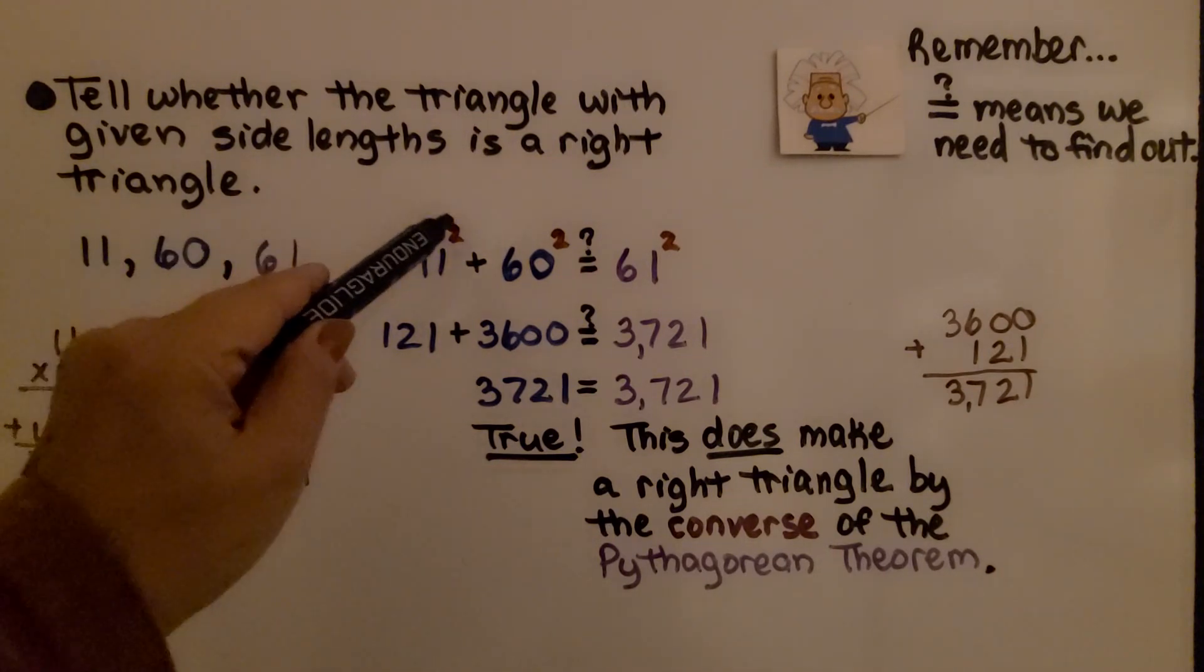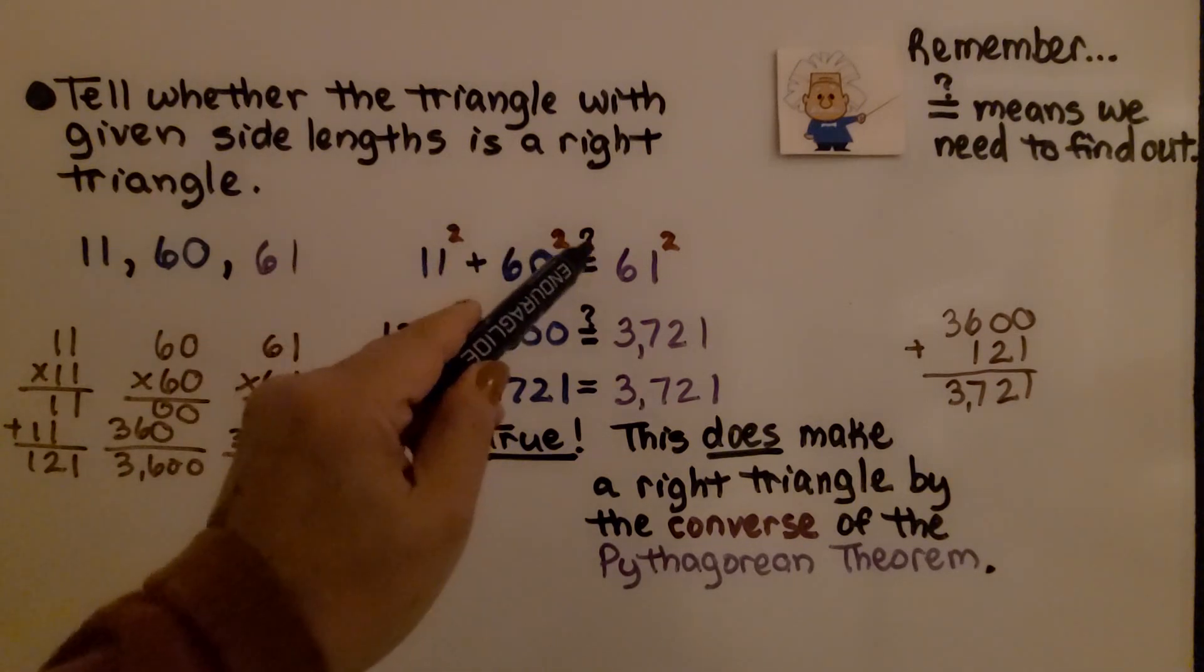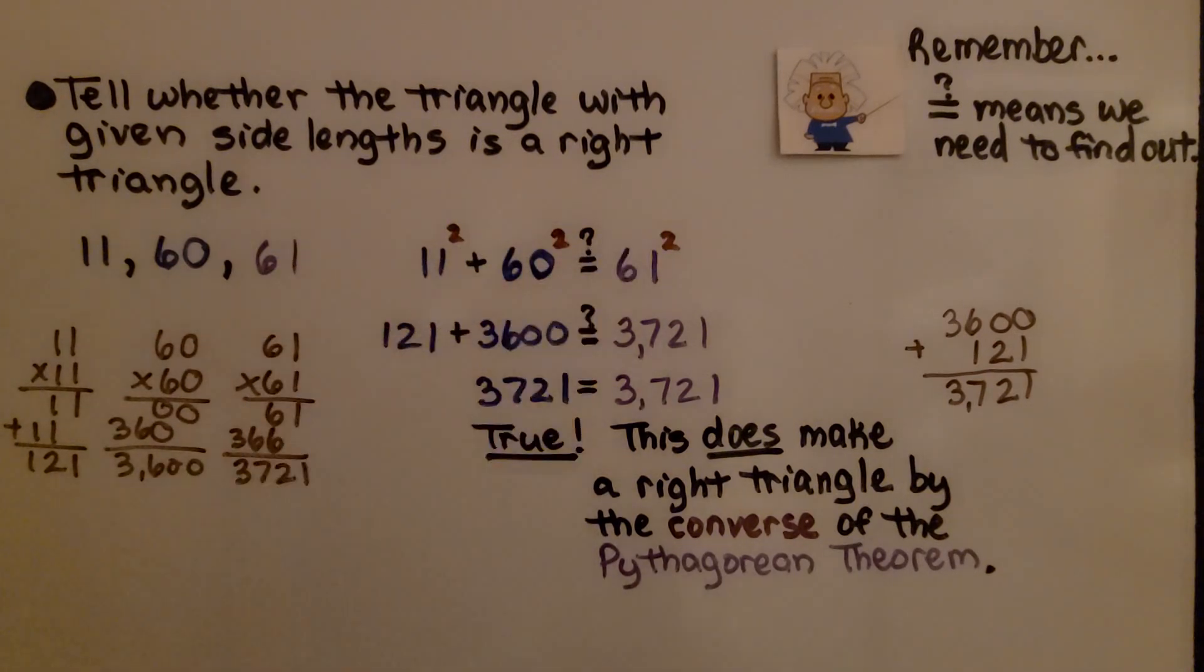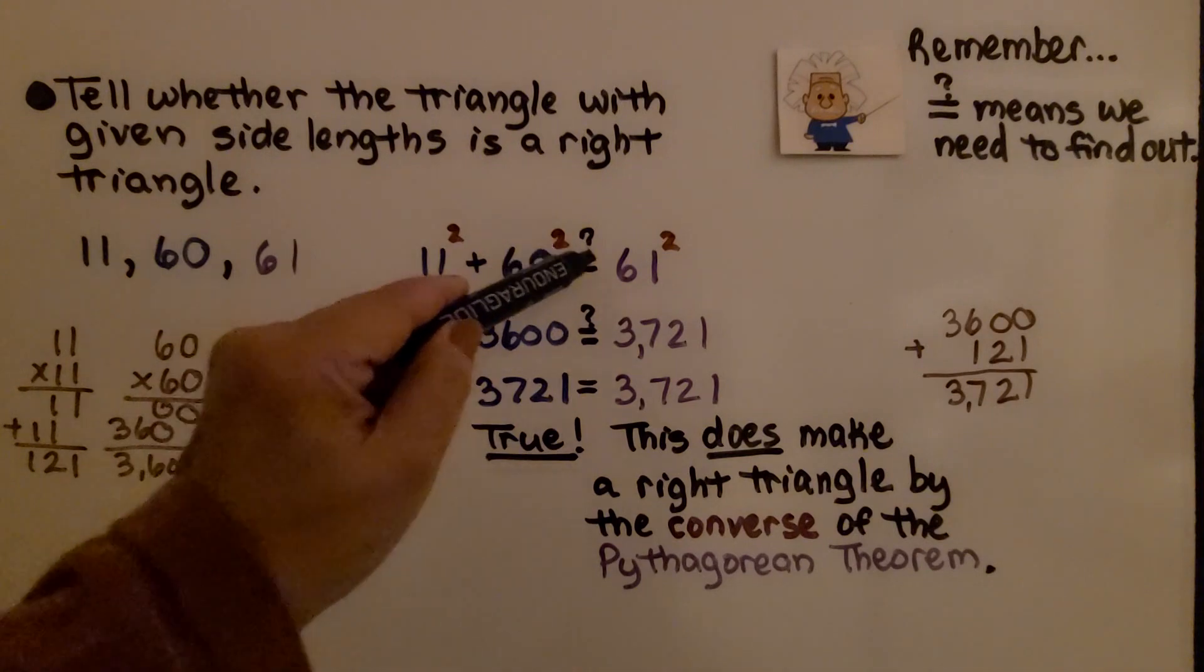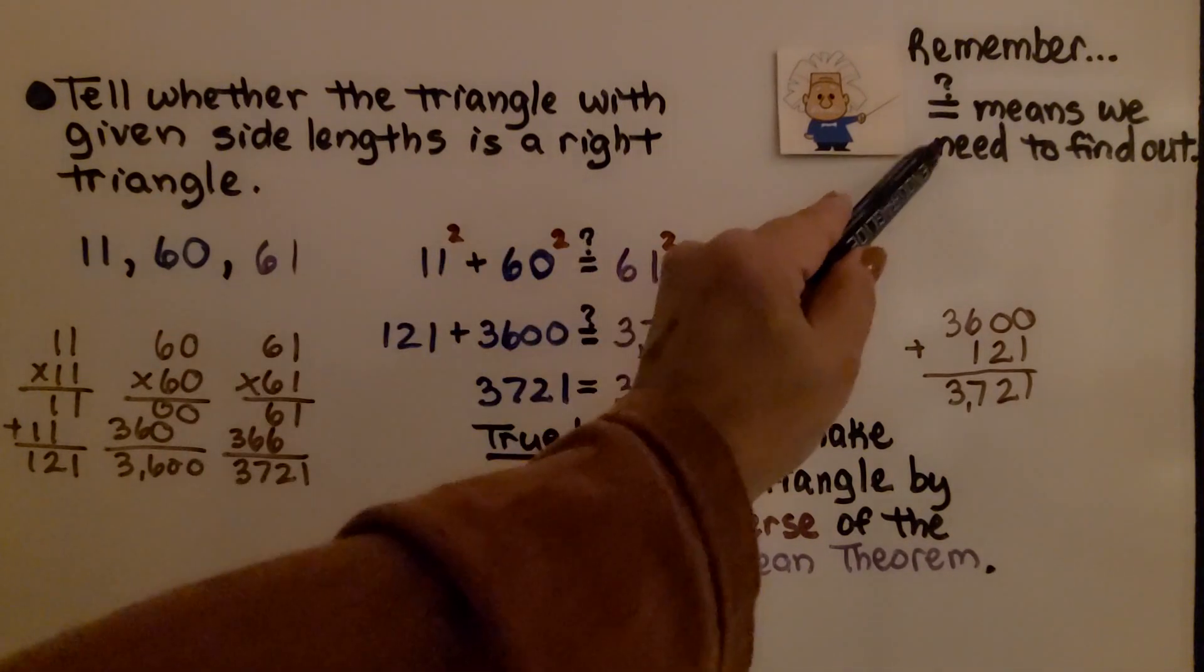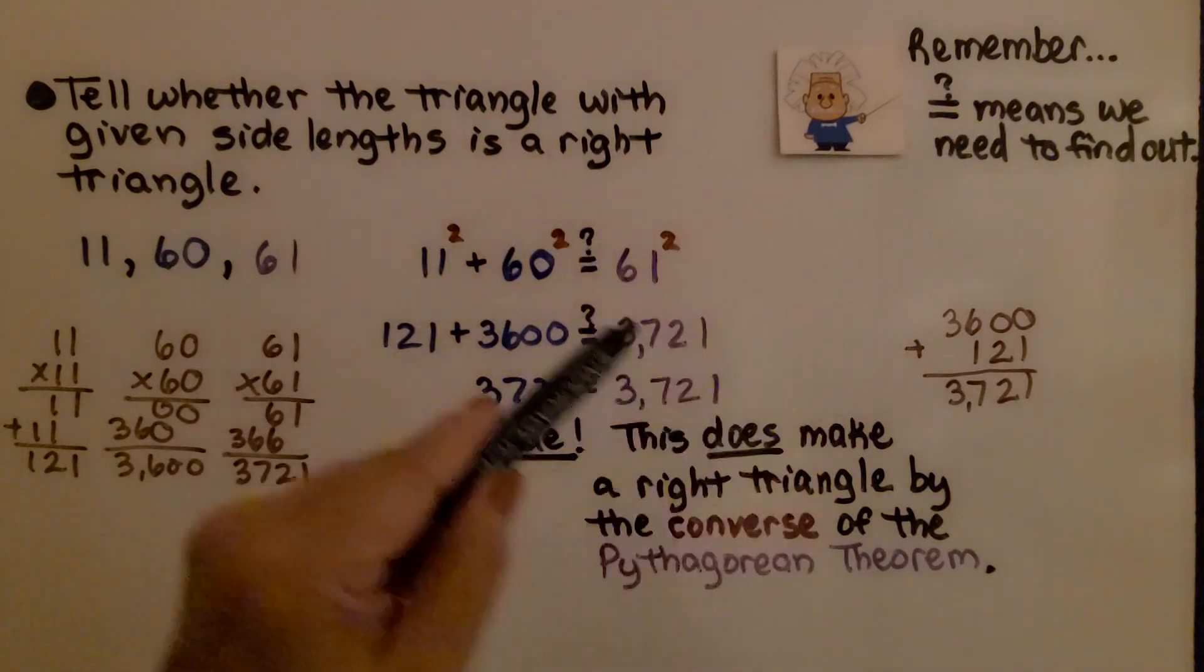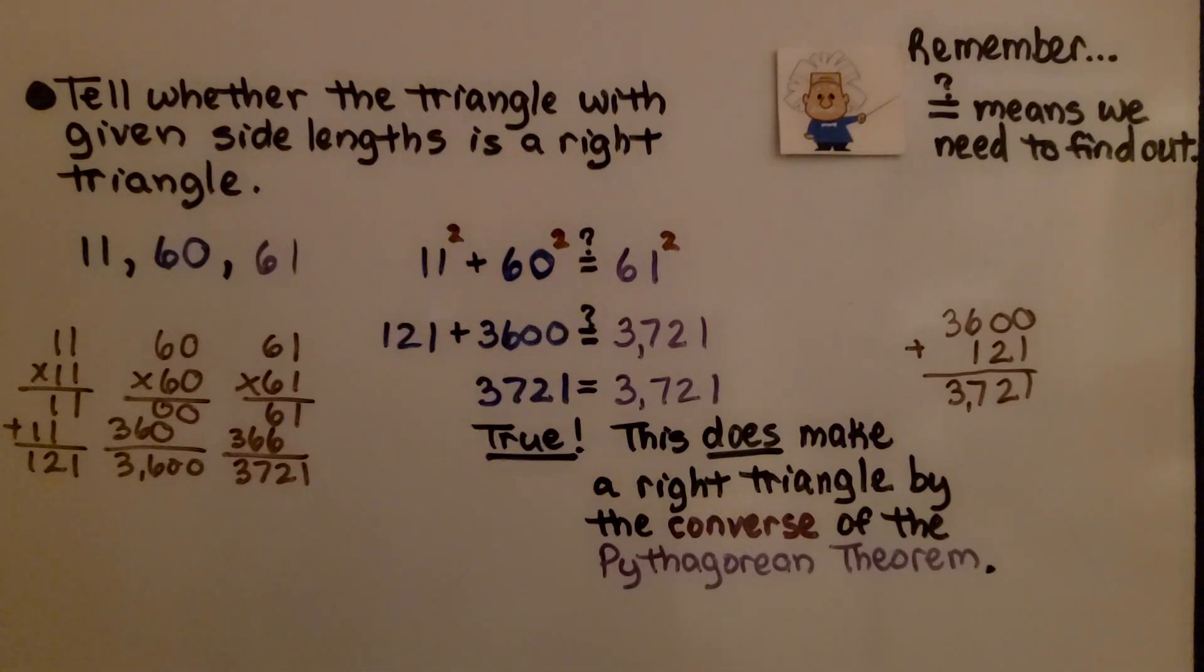We write 11 squared plus 60 squared. Is it equal to 61 squared? Remember, when you see the equal sign with a question mark on it, it means we need to find that out.